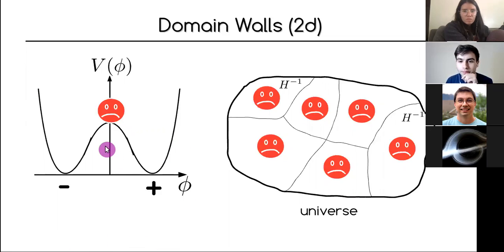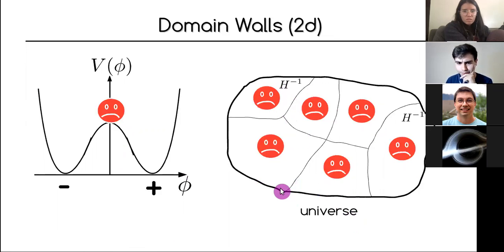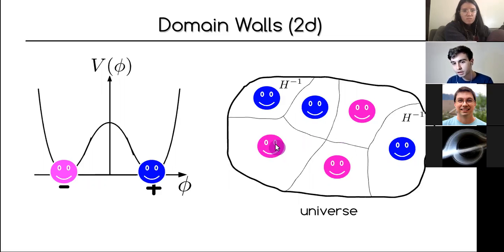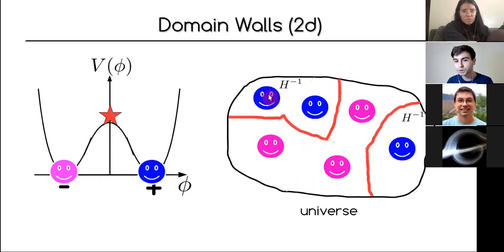Different Hubble patches — regions that cannot talk to each other — will randomly fall into the pink vacuum or the blue vacuum. If you are someone who wants to walk in space from one region to another causally disconnected region, in field space this corresponds to going up the potential and back down again. In the boundary between these two regions you have trapped energy, which is what we call a domain wall.